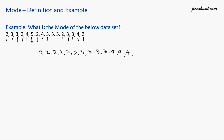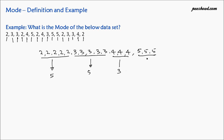Now we have five — three times: five, five, five. Let us write down how many times each number appears. Number two appears five times, number three also appears five times, number four appears three times, and five is coming three times. So number two and number three are both appearing five times, so the mode of this particular data series is two and three both.